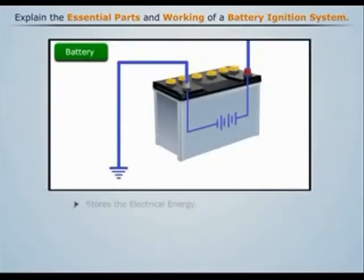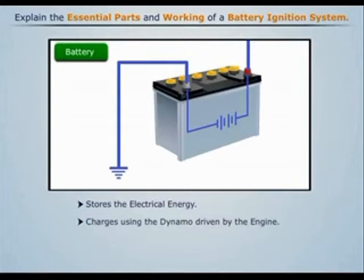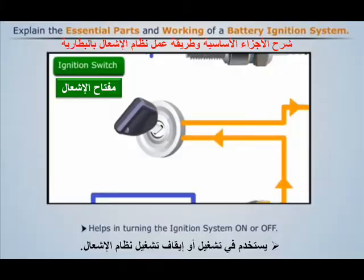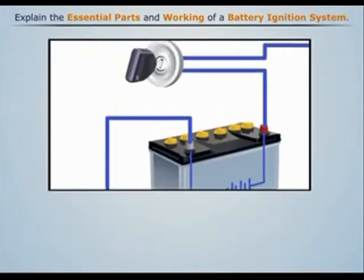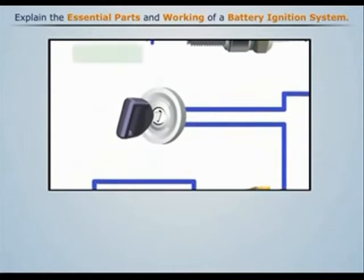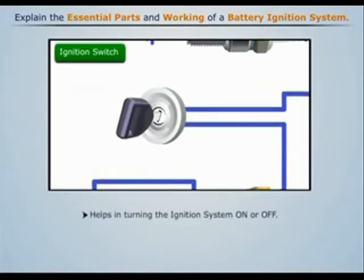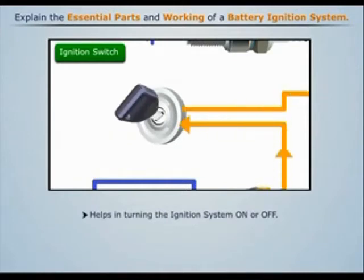A rechargeable lead acid battery is used to provide electrical energy for ignition. This battery is recharged by a dynamo which is driven by the engine. The battery is connected to the primary winding of the ignition coil through an ignition switch, which is used to turn the ignition system on or off.